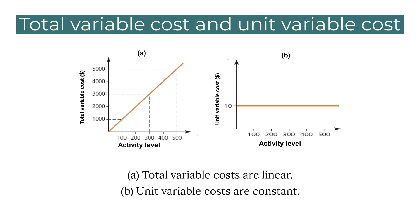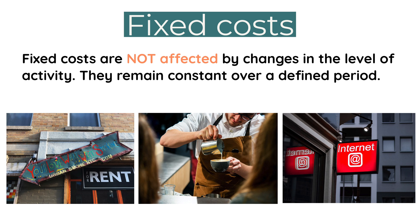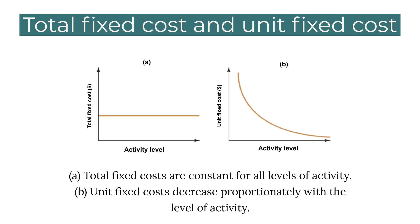A fixed cost is one which is not affected by changes in the level of activity or output. Irrespective of whether Candy sells 500 or 1,000 coffees a day, she would pay the same rent per month, the same salary for her full-time staff, and the same internet costs every month. An important feature of total fixed cost is that it remains the same for all activity levels. However, as the number of units increases, the fixed cost attributable to each unit decreases.